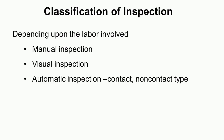Let us understand the classification of inspection. One type of classification is depending upon the labor involved: manual inspection, visual inspection, and automatic inspection. In manual inspection, the operator takes the work piece and appropriate measuring instrument and checks the parameter — this process is sometimes slow and subject to operator fatigue. In visual inspection, no instruments are used; work pieces are inspected for defects like burrs, cracks, blow holes, etcetera — at most the operator may use a magnifying lens.